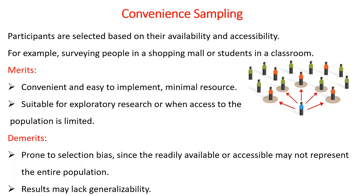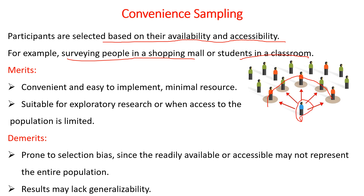Let's start with convenience sampling. As the name implies, participants are selected based on convenience or based on their availability and accessibility to the researcher. For example, surveying people in a shopping mall or students in a classroom is easily accessible. Taking samples from the nearby population is convenience sampling.